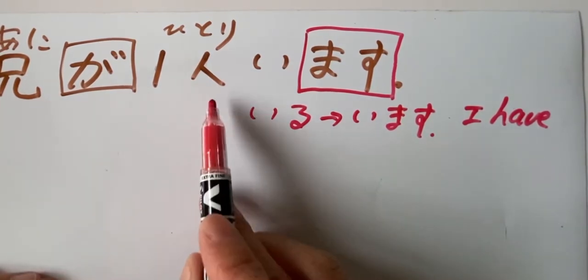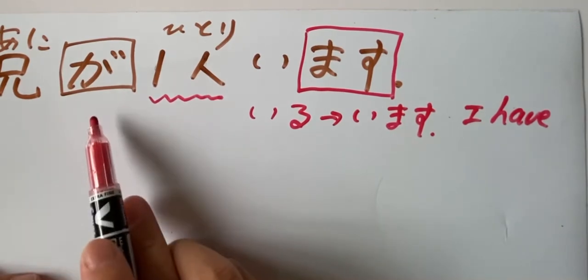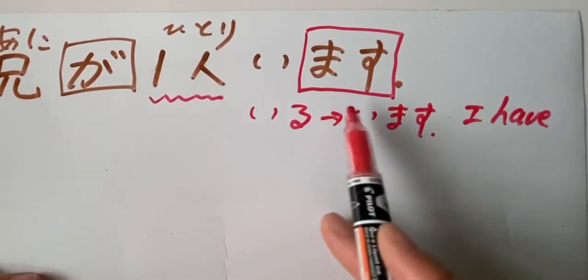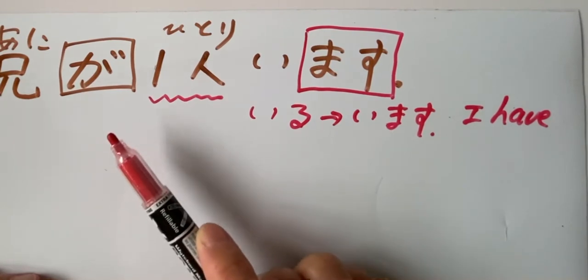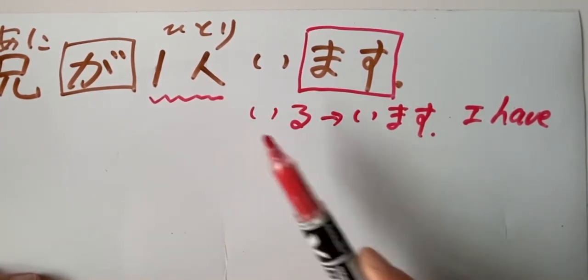Hitori. One person. Hitori. One person. Ani ga hitori imasu. I have one older brother. Ne. One older brother.